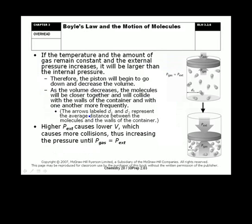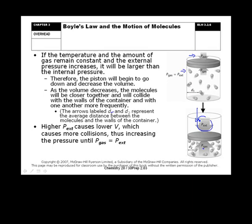If the temperature and amount of gas remain constant and external pressure increases, it will be larger than the internal pressure. When everything is balanced, the piston won't move. If we increase the pressure outside — for example by pushing on a syringe — the piston closes until the pressure inside equals the pressure outside. When we reduce the space for gas molecules, as volume decreases the molecules get closer together, they collide with each other more frequently, and that increased collision rate is how pressure increases.